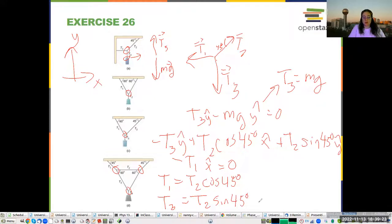Now, I already know T3 is equal to mg. So, T2 equals mg over sine of 45 degrees. So, T2 equals the square root of two times mg. I can plug this back into here and get T1 equals the square root of two times, not the square root of two.